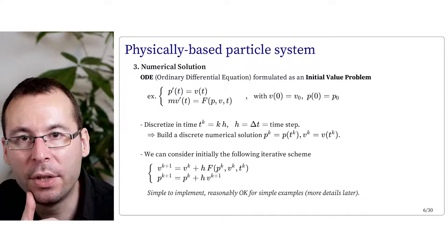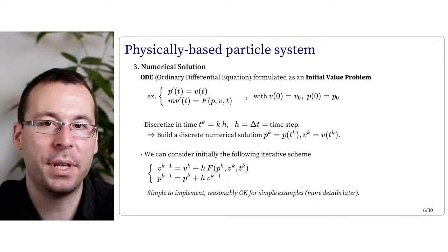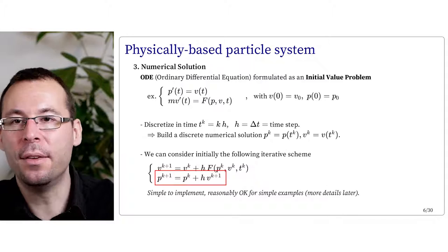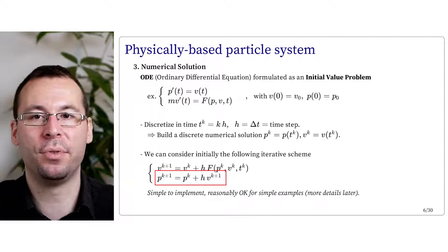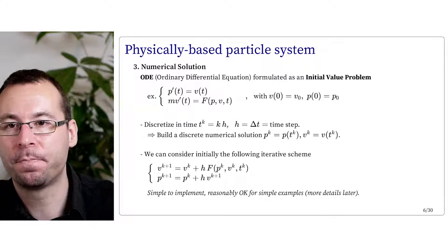The ideal scheme can depend on the properties of the force. By default we can use a very simple iterative scheme called the semi-implicit Euler method, which states that v at time k+1 equals the current velocity vk plus h times the force, and pk+1 equals pk plus h times the new velocity vk+1, the one we just computed. It is rather simple to implement and works reasonably well for most cases.